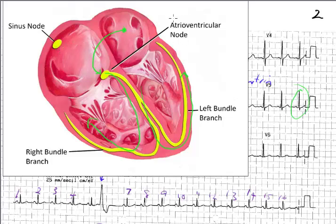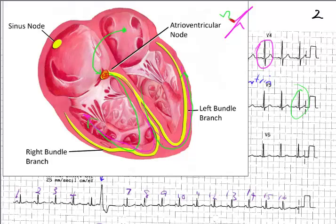In the normal situation, the SA node delivers a depolarizing potential to the atria, which gives rise to the P wave. Then there is a short delay as the impulse goes through the AV node — this little segment here. Then there's a racing down through the HIS bundle system which delivers the electrical signal to the ventricle so it can contract rapidly, and we get a narrow QRS. Now, if we have a ventricular ectopic, it will start somewhere outside the HIS bundle system.